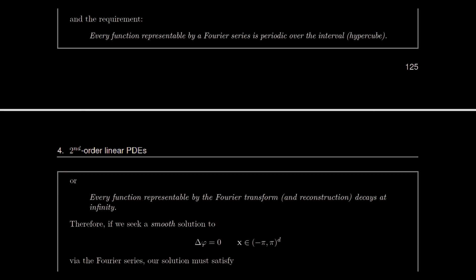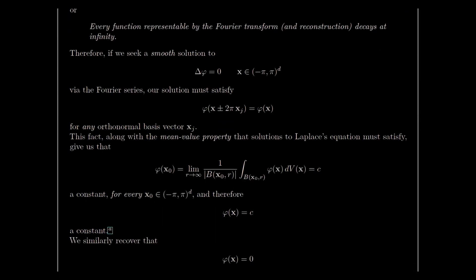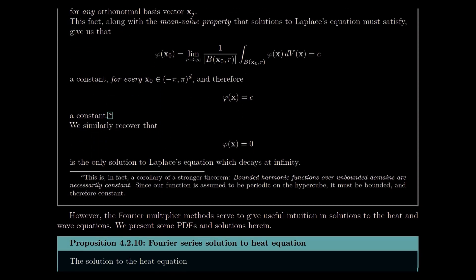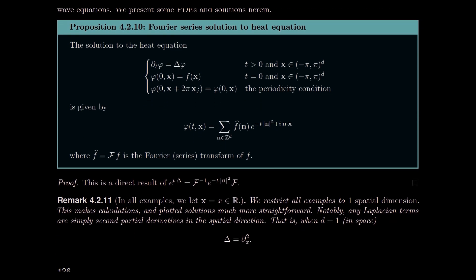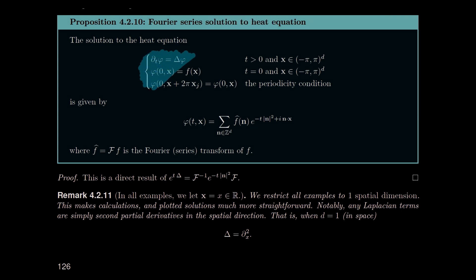Let's briefly recall that the only solutions to the Laplace equation in the domains that Fourier series and transform are naturally suited to were trivial — constants in the bounded case and zero in the unbounded case. But we do have some very non-trivial solutions for the heat and wave equations. We'll start with this proposition: the Fourier series solution to the heat equation.